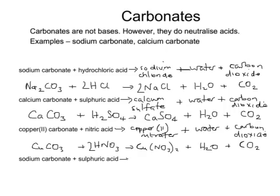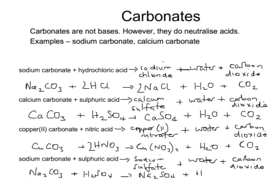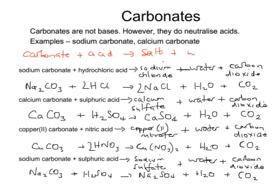Finally, sodium carbonate and sulfuric acid react together to make the salt sodium sulfate, plus water, and carbon dioxide. In symbols: sodium carbonate is Na₂CO₃, sulfuric acid is H₂SO₄, that makes sodium sulfate Na₂SO₄, plus water H₂O, plus carbon dioxide CO₂ — and that one already balances. So the general equation is: carbonate plus acid gives salt plus water plus carbon dioxide.